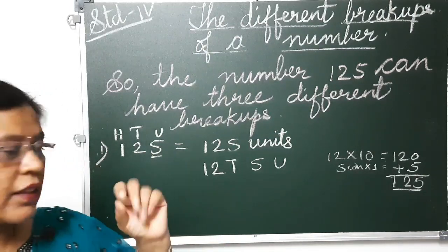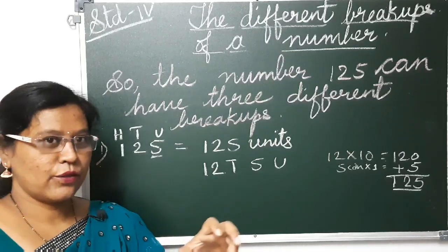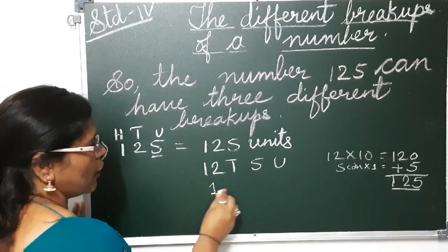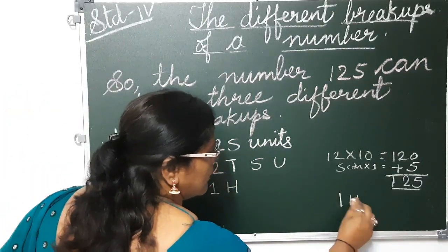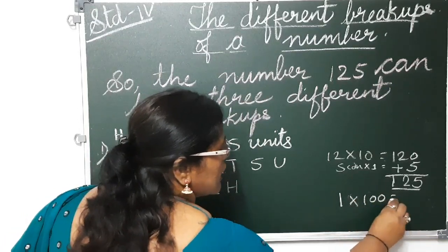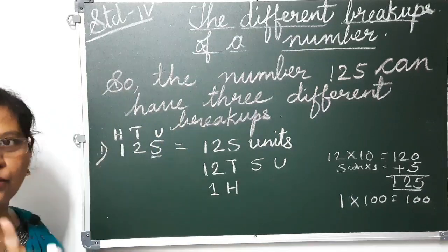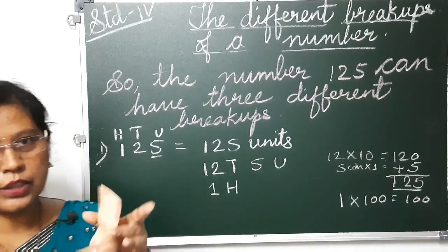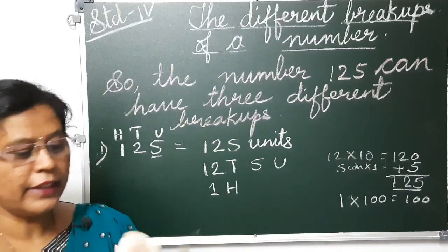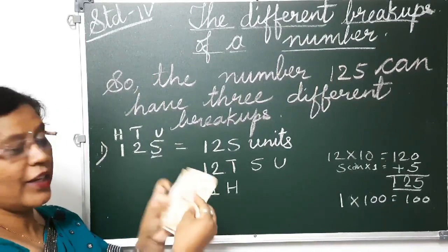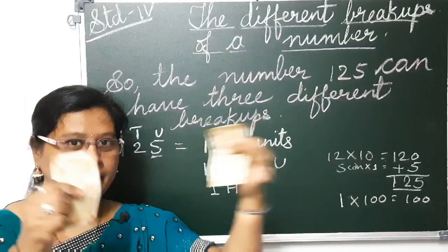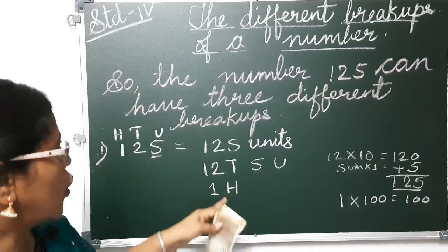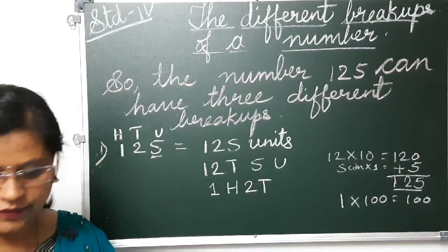Now the third break up: for that, I'm sorry my dear students, I do not have a 100-rupee note with me right now, but you can have a 100-rupee note. One hundred means 1 into 100 equals 100. So 100 you can have, then 2 tens. I am having 2 tens — two 10-rupee notes here. 2 tens means 10 and 10, so 20 rupees. I am having 2 tens and 5 coins.